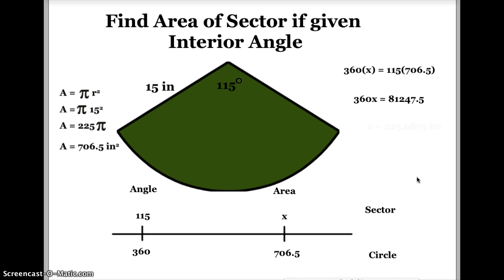Now, to finish solving for this, I have to divide both sides by 360 because I've got to undo multiplying x by 360. So when I do that, I get x is equal to 225.6875 inches squared.